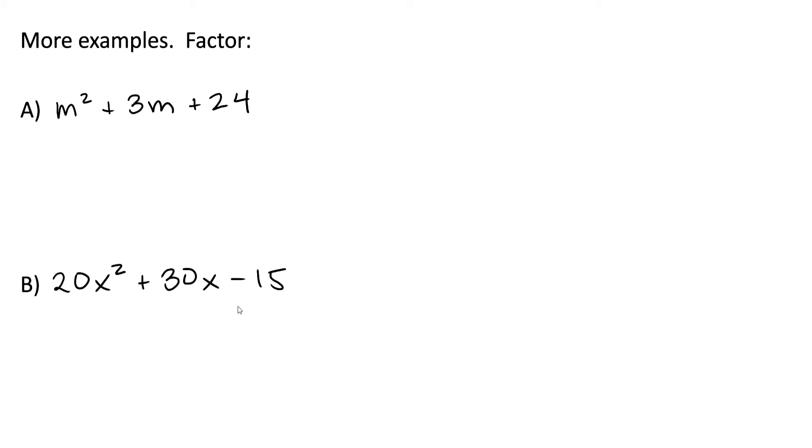Let's look at two more examples. Let's say we wanted to factor M squared plus 3M plus 24. A is 1, B is 3, C is 24. AC, 1 times 24, is equal to positive 24.